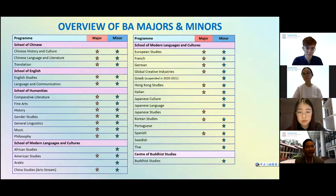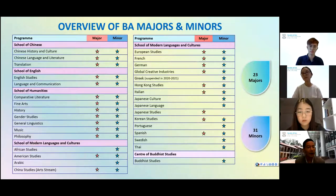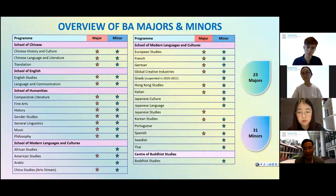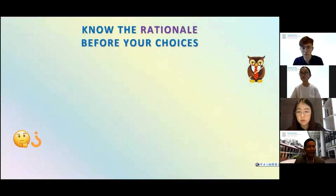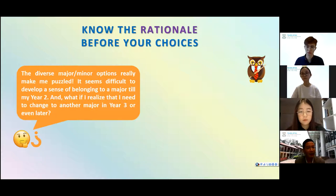Here we have a matrix of all these majors and minors — 23 majors and 31 minors. They are grouped by schools: three in School of Chinese, two in School of English, seven from School of Humanities. For School of Modern Languages and Cultures, there are 11 majors and 18 minors. And lastly there's one Buddhist Studies minor in the Centre of Buddhist Studies. It's truly a matrix with too many options, and often first-year students are really puzzled about how to choose among these majors and minors.